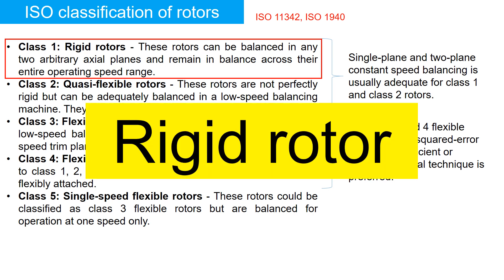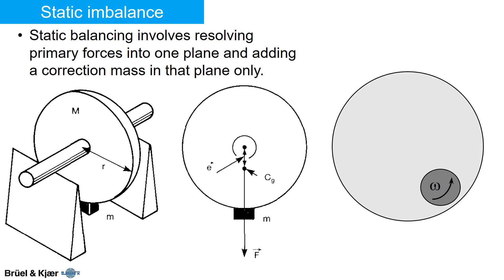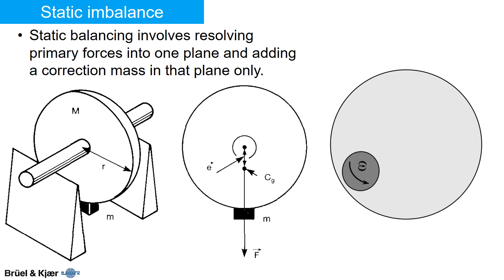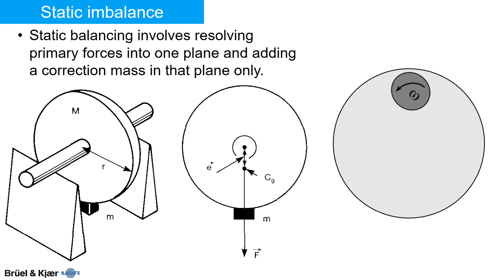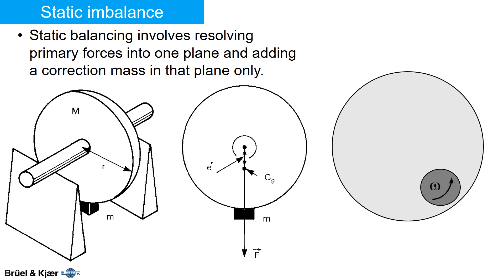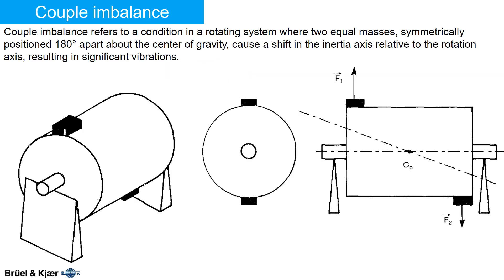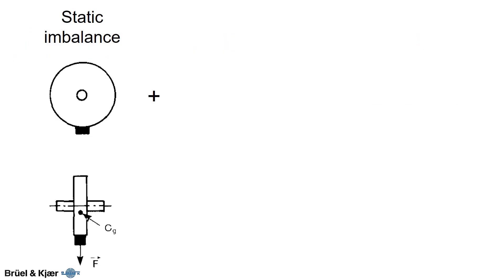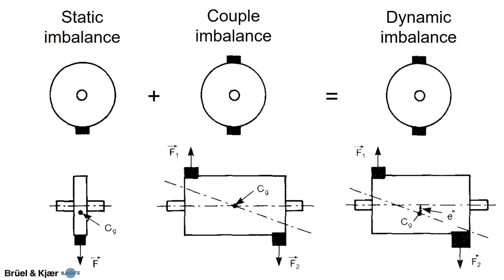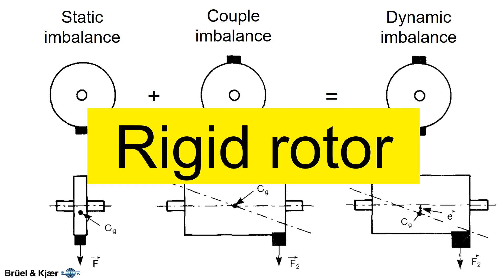Let's start with rigid rotor class 1. Static balancing in rigid rotors involves resolving forces and adding correction masses in one plane. Couple imbalance occurs when two equal masses are 180 degrees apart. Dynamic imbalance combines static and couple imbalance, and rigid rotors usually require two planes for balancing.